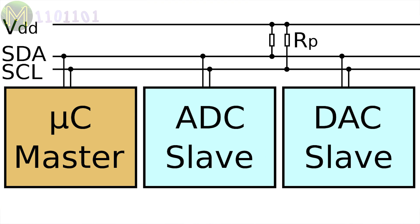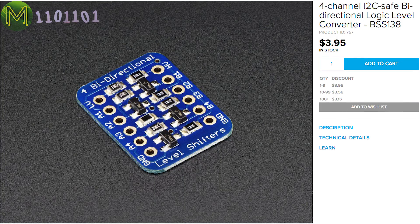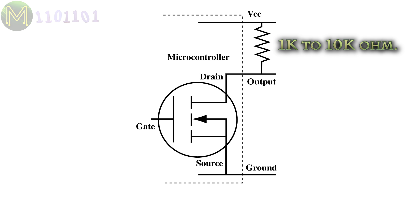I2C is a two-wire, bi-directional, multi-master, open-drain bus, which means master and slave devices can both transmit and receive. It can operate at 5V, 3.3V or down to 1.8V. This can make logic level shifting a bit more complicated, but these days most people use the common and cheap BSS138 MOSFET to handle this. Since I2C has open-drain outputs that pull the lines down, you will need to add pull-up resistors on all devices. Values from 1kΩ to 10kΩ are often used.